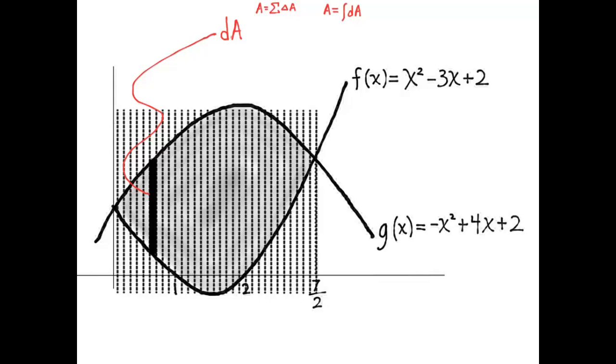Now we have to compute dA. dA is a rectangle, so we multiply the height times the width. And to get the height of the rectangle, since it's a vertical distance, we want to subtract y values. And we subtract the higher y value minus the lower y value. The width of the rectangle is just dx. And then if we compute g of x minus f of x and simplify it, we get 7x minus 2x squared. So dA is 7x minus 2x squared times dx.